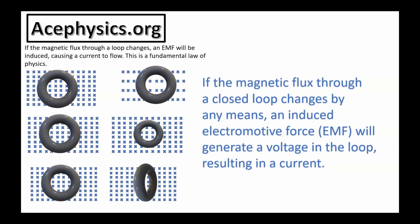If the magnetic flux through a closed loop changes by any means, an induced electromotive force will generate a voltage in the loop, resulting in a current.